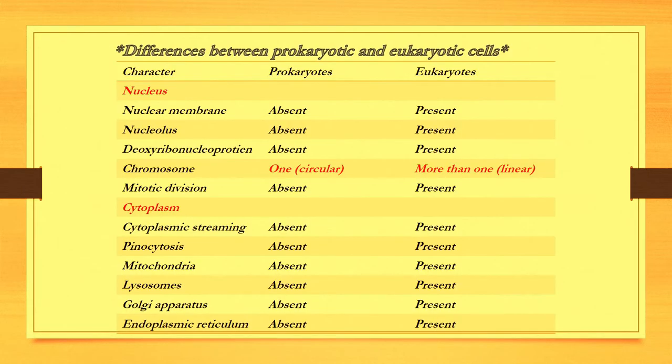The human and animal cells are of the type of eukaryotes. As for microorganisms such as bacteria, they are prokaryotes. As you can see in this slide, I have written the differences between both cells.